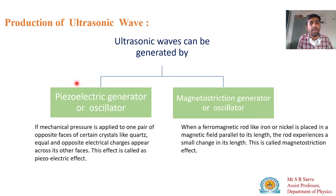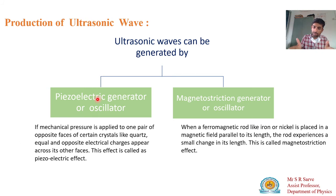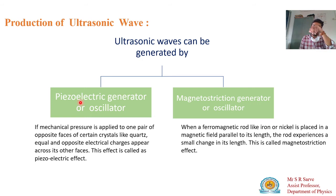Ultrasonic waves can be generated by two methods: the first is the piezoelectric generator method and the second is the magnetostriction generator method. In the piezoelectric effect, if you apply pressure on one side of a crystal, there is a production of electric charge on the perpendicular side. Conversely, if you apply an electric charge, there is a production of mechanical stress.